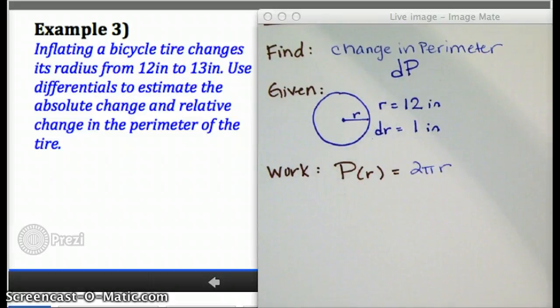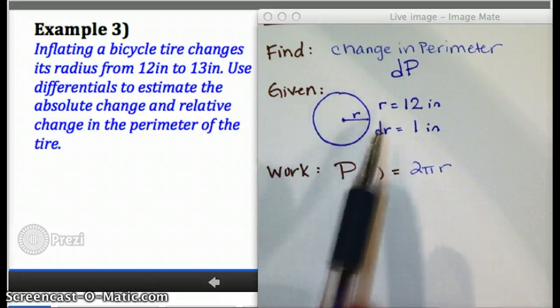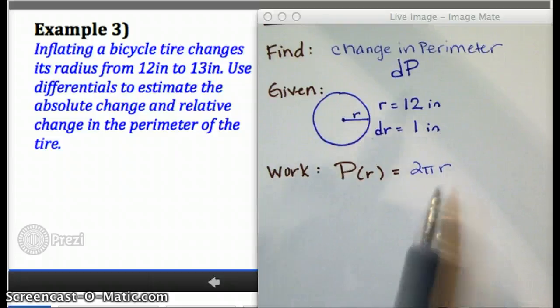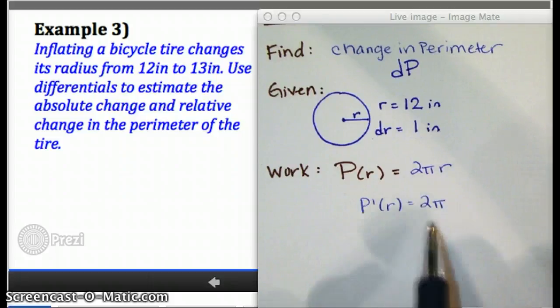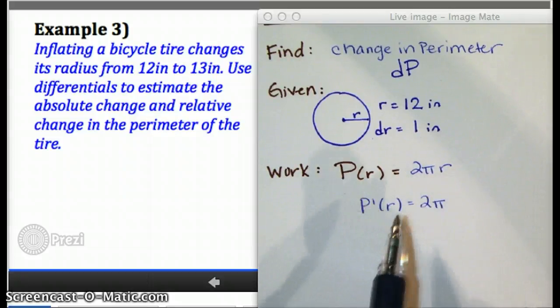Right, so hopefully you remembered that perimeter is the same thing as circumference, so it's just 2πr. And I'm going to go ahead and take the derivative right away, because I know I'm going to need it later. In this case, the derivative is actually just a constant. It's just 2π.